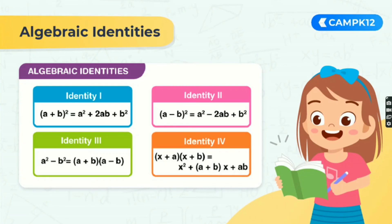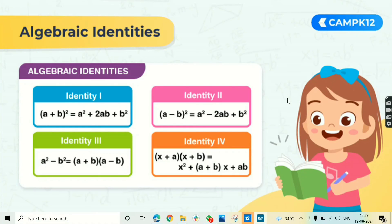Let's talk about the last topic: algebraic identities. These are used to solve questions based on algebra. You simply have to learn these 4 identities. First: (a+b)² = a² + b² + 2ab. Second: (a−b)² = a² + b² − 2ab. Third: a² − b² = (a+b)(a−b). And the fourth: (x+a)(x+b) = x² + (a+b)x + ab. Learn these 4 major identities and you will be able to solve most questions you face in algebra.